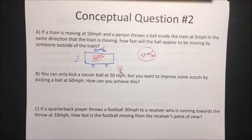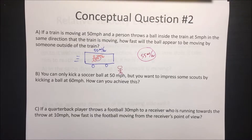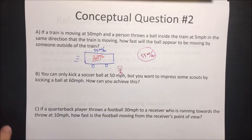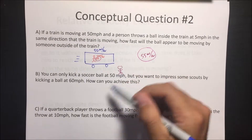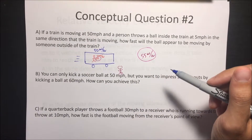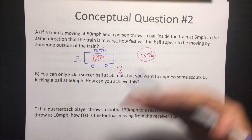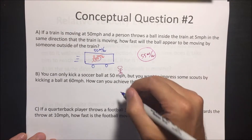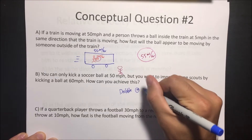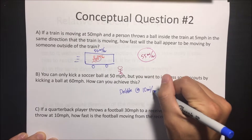Part B: you can only kick a soccer ball at 50 miles an hour, but you want to impress some scouts by kicking a ball at 60 miles an hour. How can you achieve this? Maybe the best way is if you're dribbling with the ball at 10 miles an hour and then you kick the ball at 50 miles an hour, now it would be going 60 miles an hour. So you dribble at 10 miles an hour.